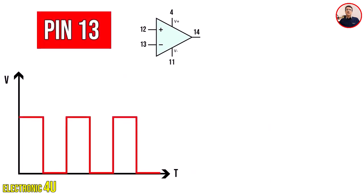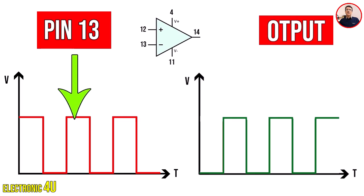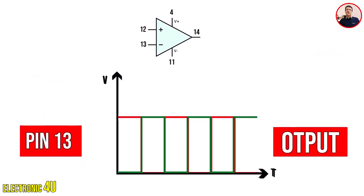Now, if we apply the signal to pin number 13 — the inverting input with the negative sign — the signal will be inverted at the output. That is, wherever the signal is on at the input, the signal is off at the output, and vice versa. This is the concept of inverting and non-inverting.